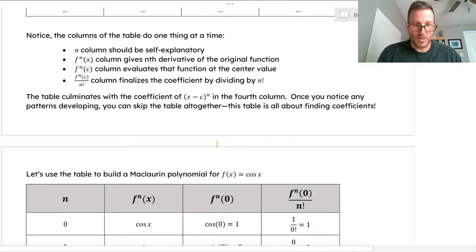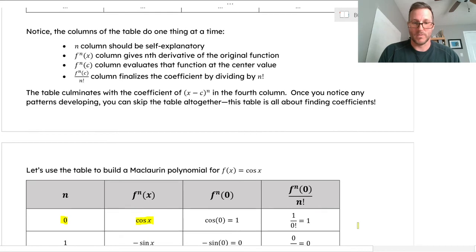I'm going to have a column that is n starting at zero. I'm going to take the nth derivative of the function, then evaluate that at c at the center value, and then divide it by n factorial. Each column just slowly builds up to that coefficient. For cosine x, at n equals zero, we start with the original function cosine x. Cosine of zero is one, and one divided by zero factorial is one. There is a non-zero coefficient.